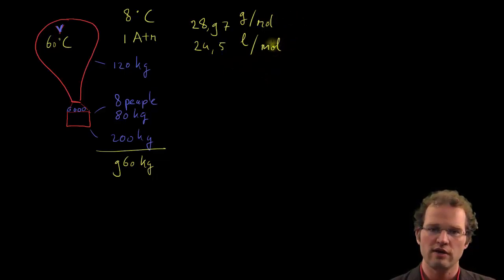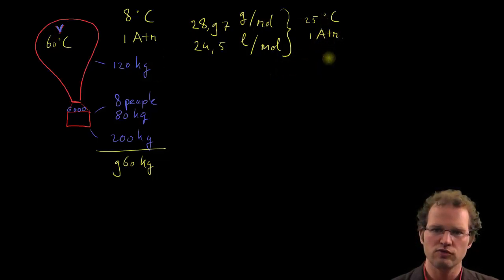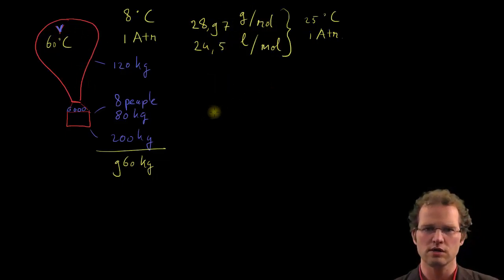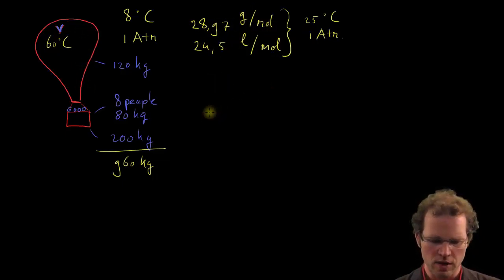Then we have a starting point for the air density which belongs with these numbers. And that's not 8 or 60 degrees. These conditions, this 24.5, is only at a temperature of 25 degrees centigrade and atmospheric pressure.